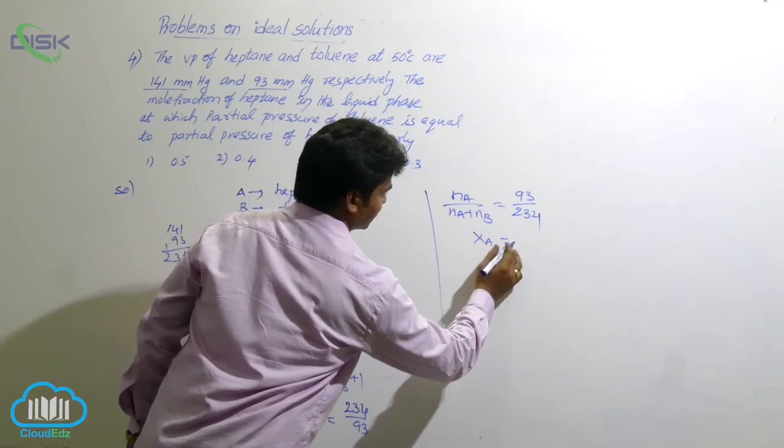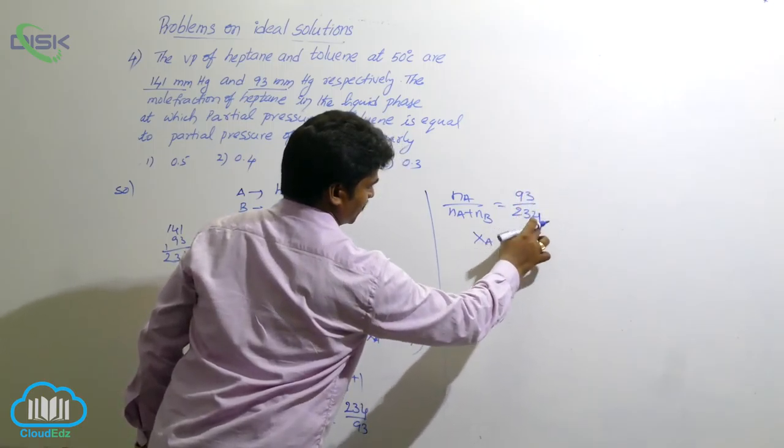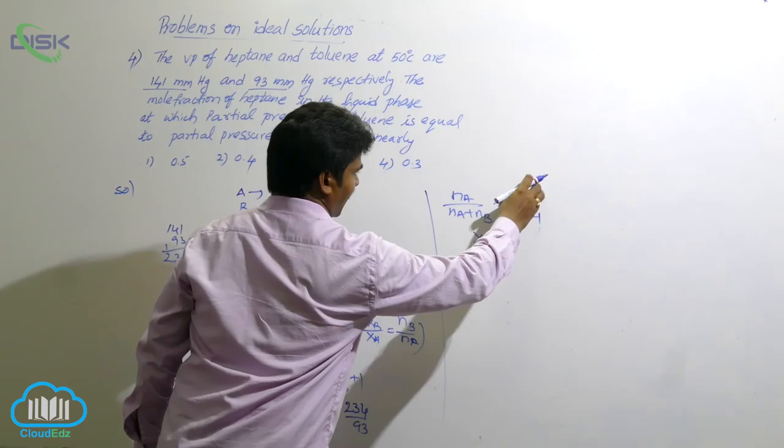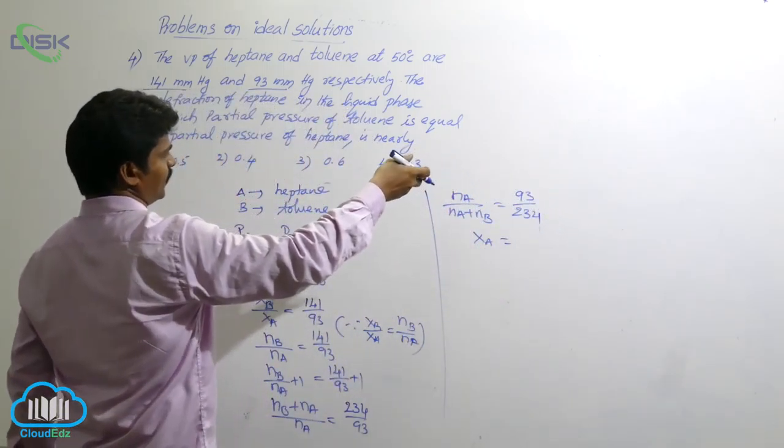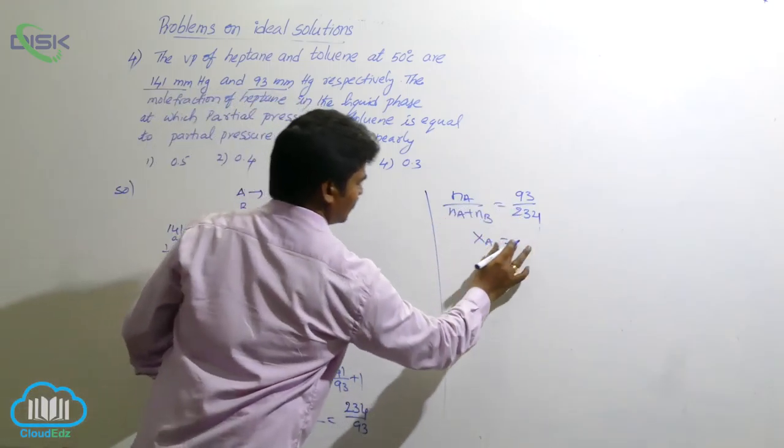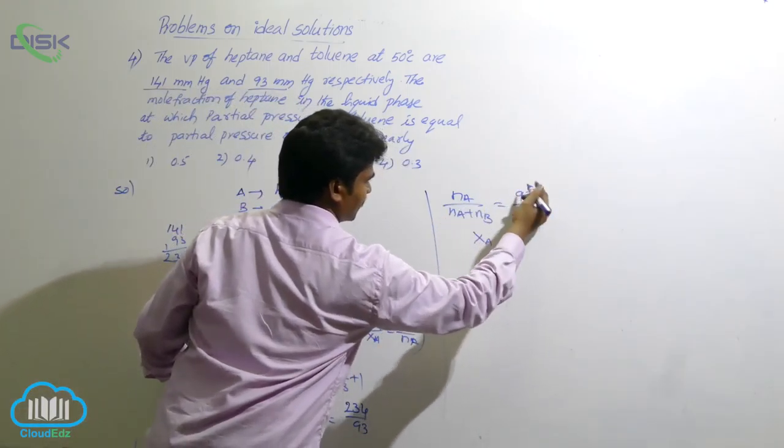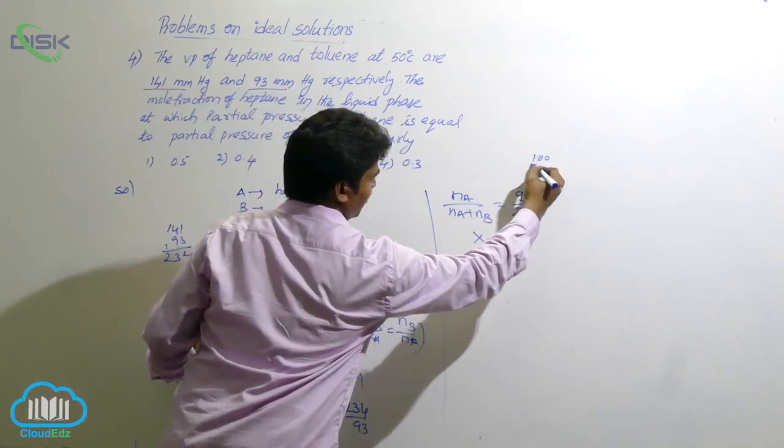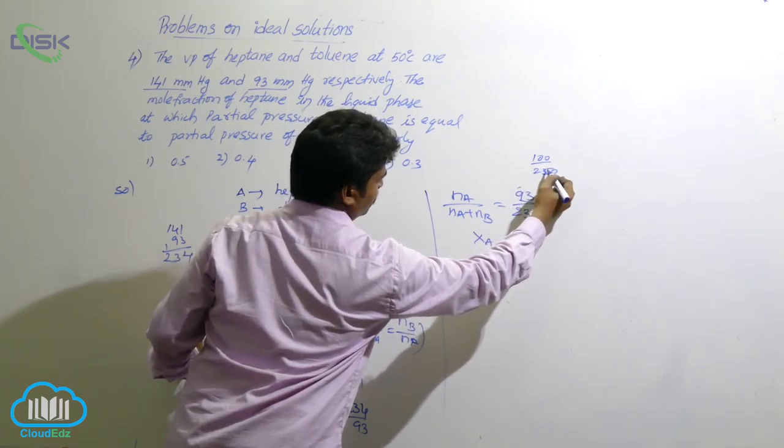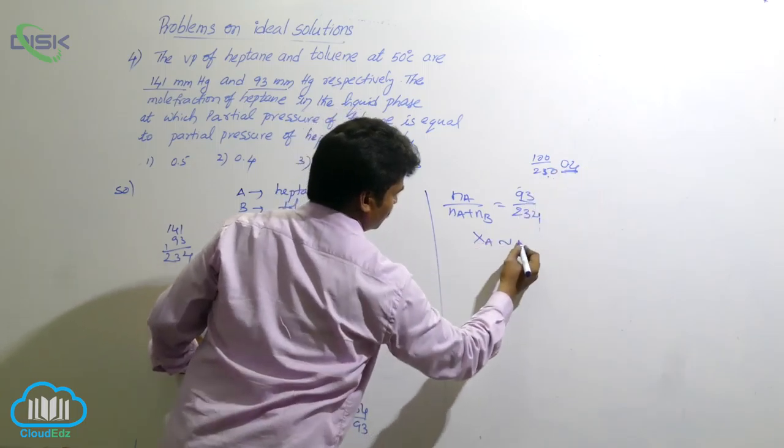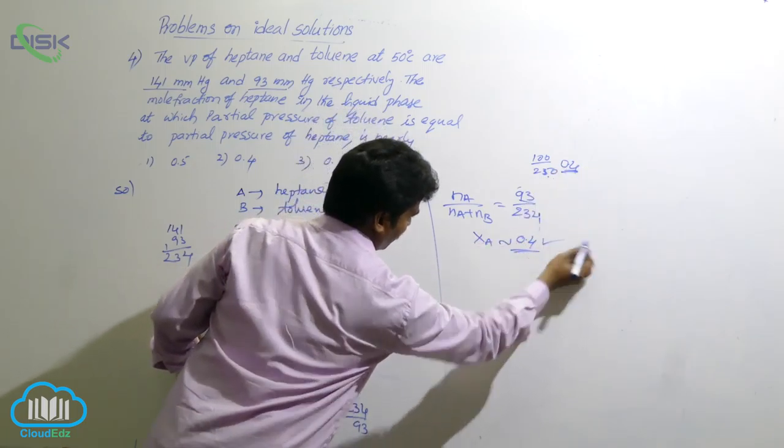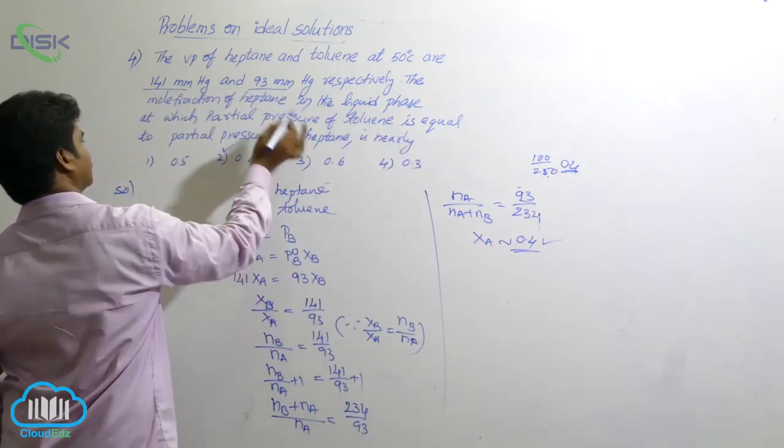Now, its value is nearly 93 by 234. Let it be nearly 100. Then, 234 how many times? 0.4 times. Nearly, it will give nearly value. If we consider this one as 100, nearly it is 250. And, let it be 150 means how much value is 0.4. So, you will get nearly value 0.4. So, answer is nearly 0.4.